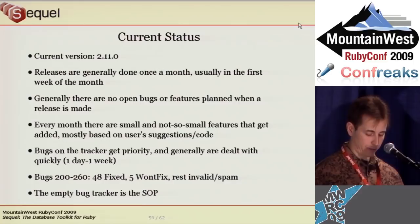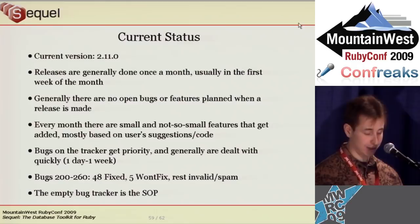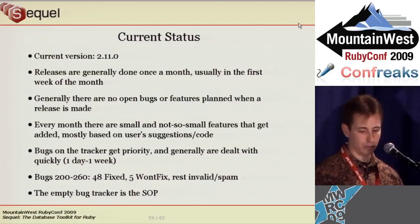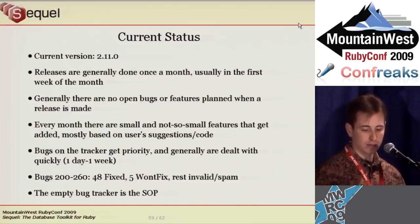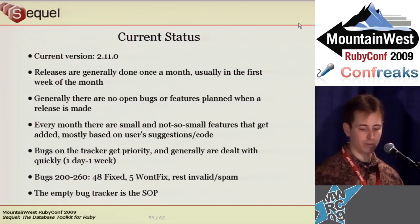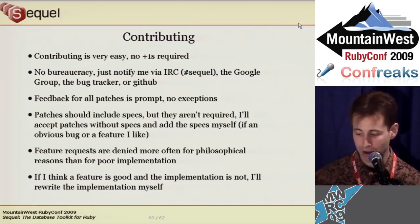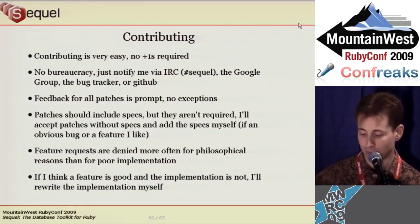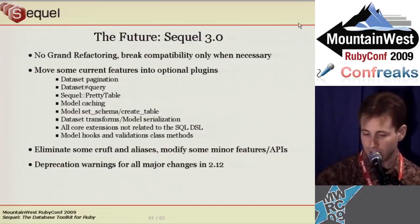Sequel is currently at 2.11, and only a year ago it was at 1.3. There was a release every two or three weeks for a while, but now I stick to a strict monthly release cycle. I take bug reports very seriously — bugs on the tracker get fixed within a day to a week. I run the full release test suite before pushing to GitHub, so the master branch is as stable as the main releases. I run all my personal apps directly off the master branch. It's very easy to contribute to Sequel — no bureaucracy, no plus ones, just show me the code and tell me why it's a good idea. I accept patches via IRC, the Google group, the bug tracker, or GitHub. I prefer specs with new features, but I'll write specs myself if I think a feature is a good idea, and I'll even rewrite the implementation if I like the feature but not the patch.